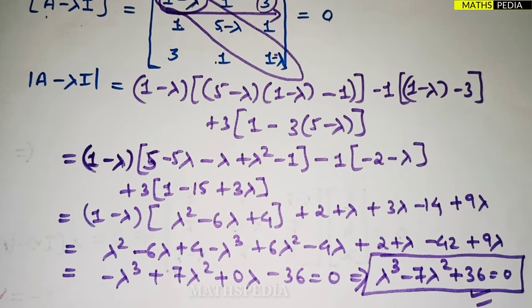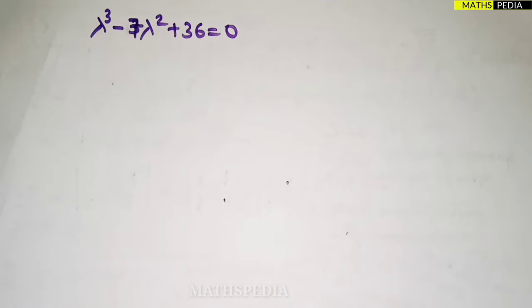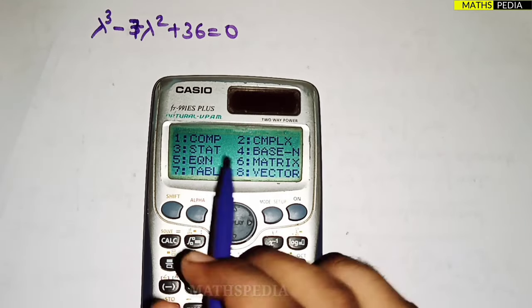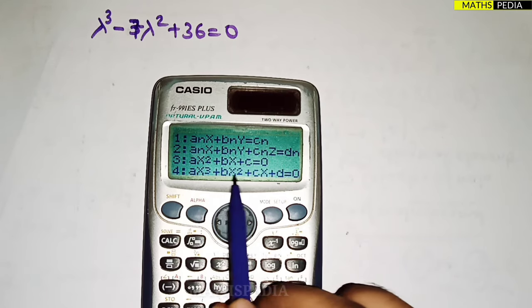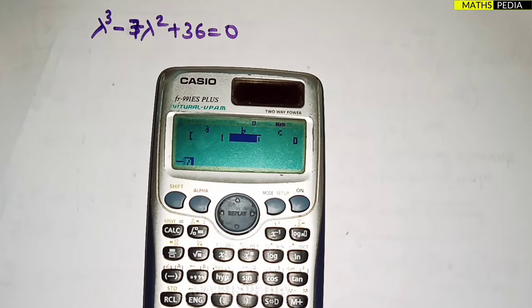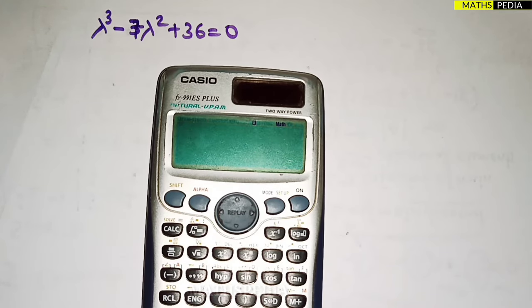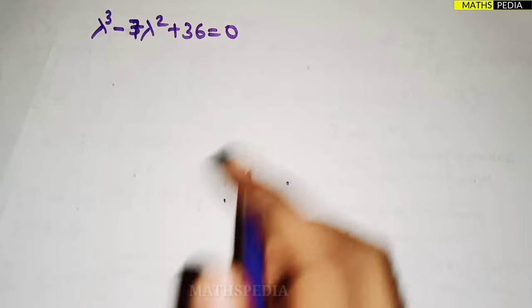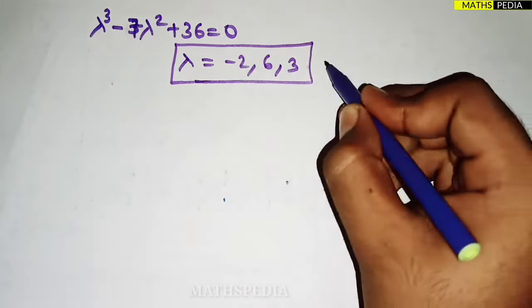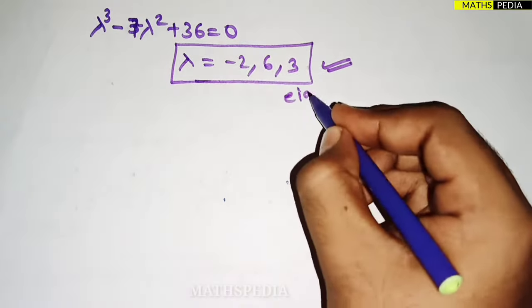Since this is a cubic equation, we solve it using a calculator. In equation mode (cubic), entering coefficients 1, −7, 0, 36 gives eigenvalues λ = −2, 6, and 3.